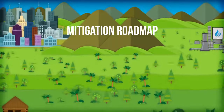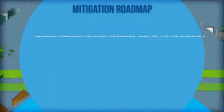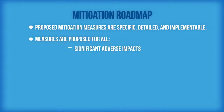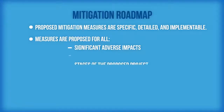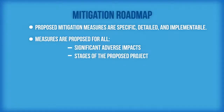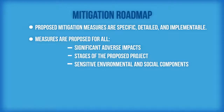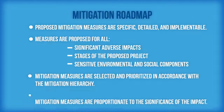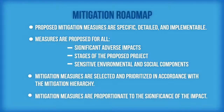A reviewer should consider the following aspects, which serve as the roadmap for mitigation and monitoring review. Proposed mitigation measures are specific, detailed, and implementable. Measures are proposed for all significant adverse impacts, stages of the proposed project, and sensitive environmental and social components. Mitigation measures are selected and prioritized in accordance with the mitigation hierarchy and are proportionate to the significance of the impact.